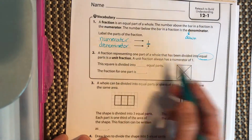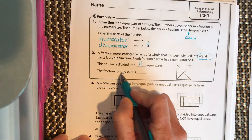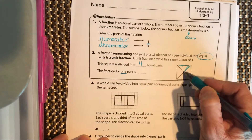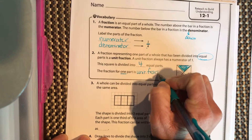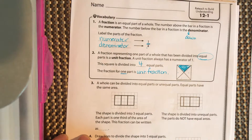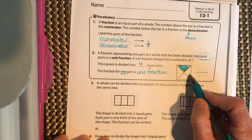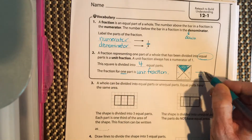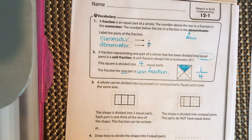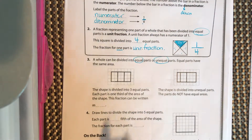This square is divided into four equal parts, and the fraction for one shaded part is a unit fraction. To write it as a fraction, draw your line. Your denominator — the total number of parts — is four, regardless of shading. The numerator tells how many are shaded, which is one. So the fraction is one fourth.